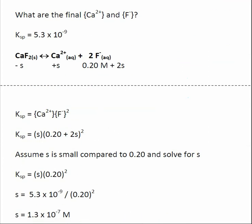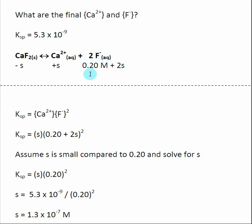I plug these values into the Ksp expression: Ksp = [Ca²⁺][F⁻]². So Ksp = (S)(0.2 + 2S)². We assume S is small compared to 0.2, which is a safe bet since 0.2 M F⁻ is relatively large compared to S. This simplifies the equation to Ksp = S × (0.2)². The squared term comes from the stoichiometric coefficient of 2 in front of fluoride.